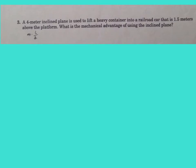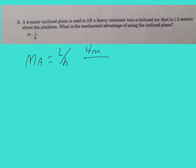In this problem, we have a 4-meter inclined plane used to lift a heavy container into a railroad car that is 1.5 meters above the platform. Not all mechanical advantage problems use the formula resistant force divided by effort force. For inclined planes, we use mechanical advantage equals length divided by height: 4 meters divided by 1.5 meters equals 2.66, which rounds to a mechanical advantage of 3.